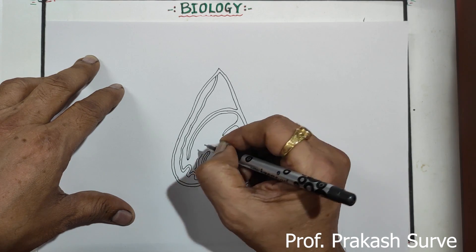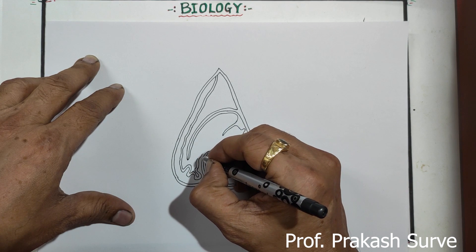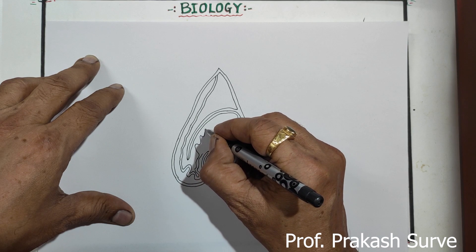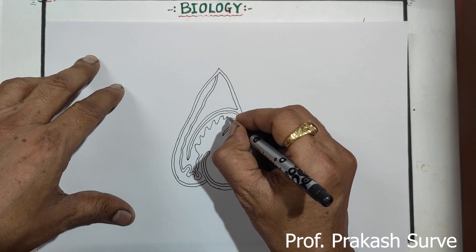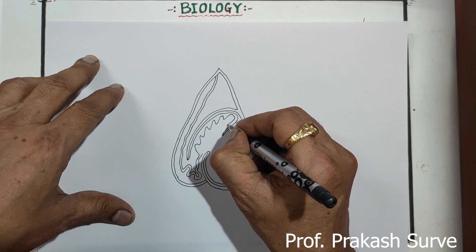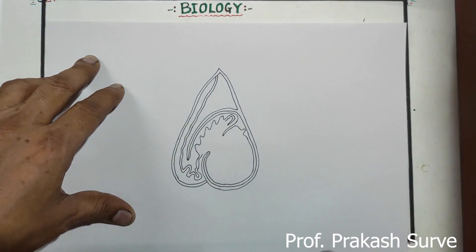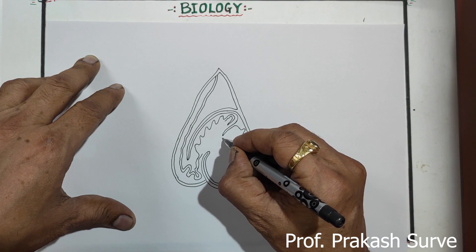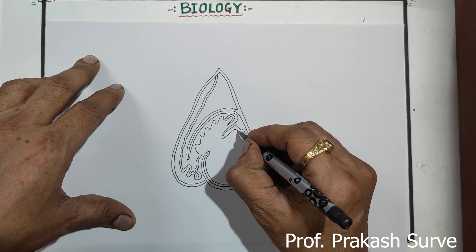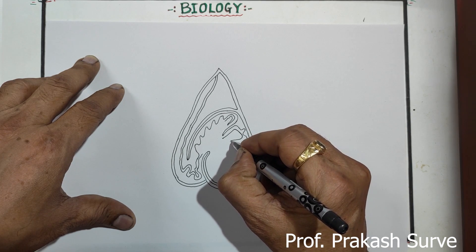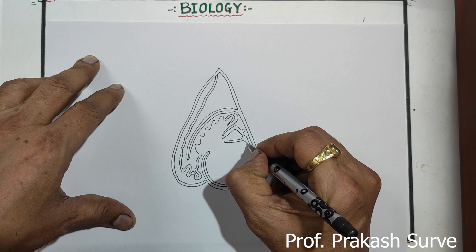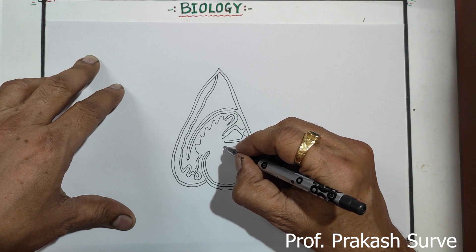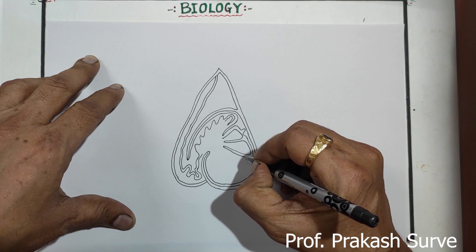So it forms the folds here. You have to continue here and bring it up to here. Now here we will draw the lobules in one line like that. Here a number of lobules you have to draw — leave the space in between so that it will be for the seminiferous tubules.